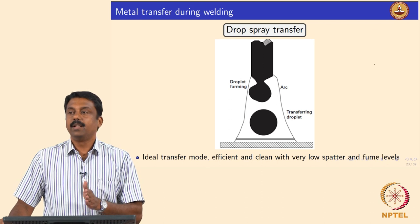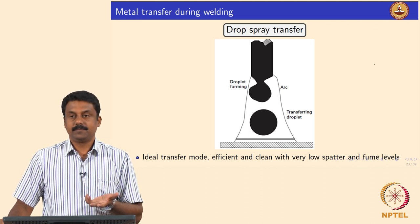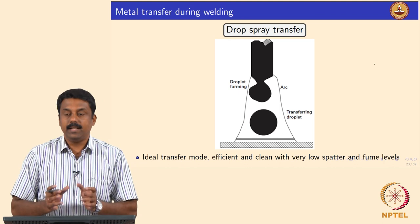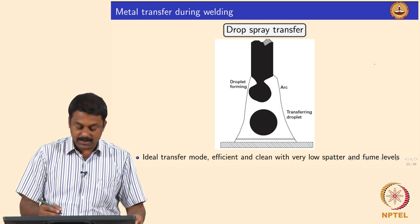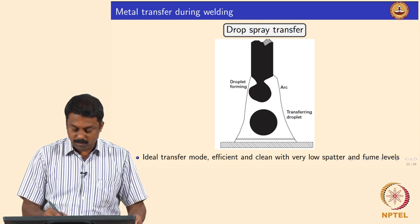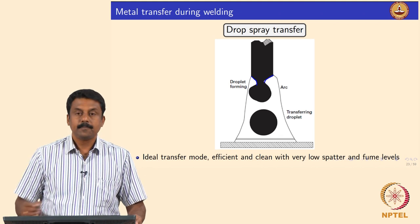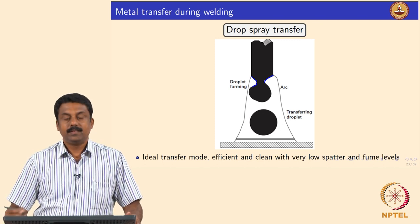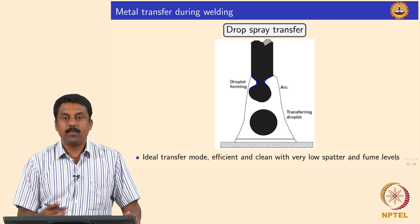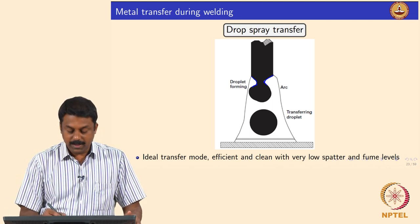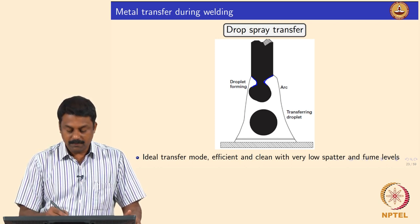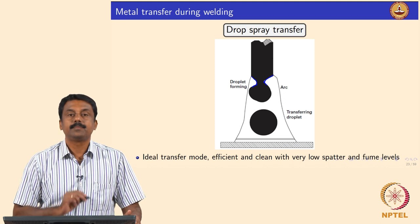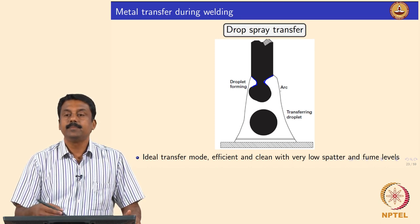Once you achieve such a transfer, this is the best transfer mode you can have, known as drop spray transfer where the droplet diameter equals the filler diameter. The droplet is molten, a neck forms, the transfer forces overcome the detachment-resisting forces - surface tension and vapor force - and the droplet detaches as a free flight with diameter equal to the filler diameter. This happens continuously in spray mode.